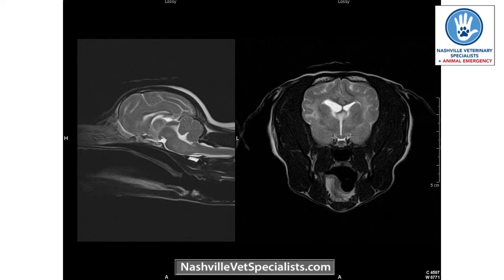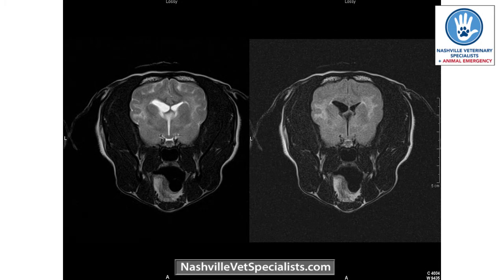Some dogs presenting with only the ocular form of GME are found on MRI to also have changes in the brainstem and cerebrum. Even when changes are subtle, they're there. The degree of changes on MRI doesn't always correlate with the signs — some severely affected dogs have unimpressive MRI findings, while others you can't believe are alive based on what you see on imaging. FLAIR imaging helps distinguish edema from other types of fluid like CSF by suppressing the CSF signal so edema stands out more.